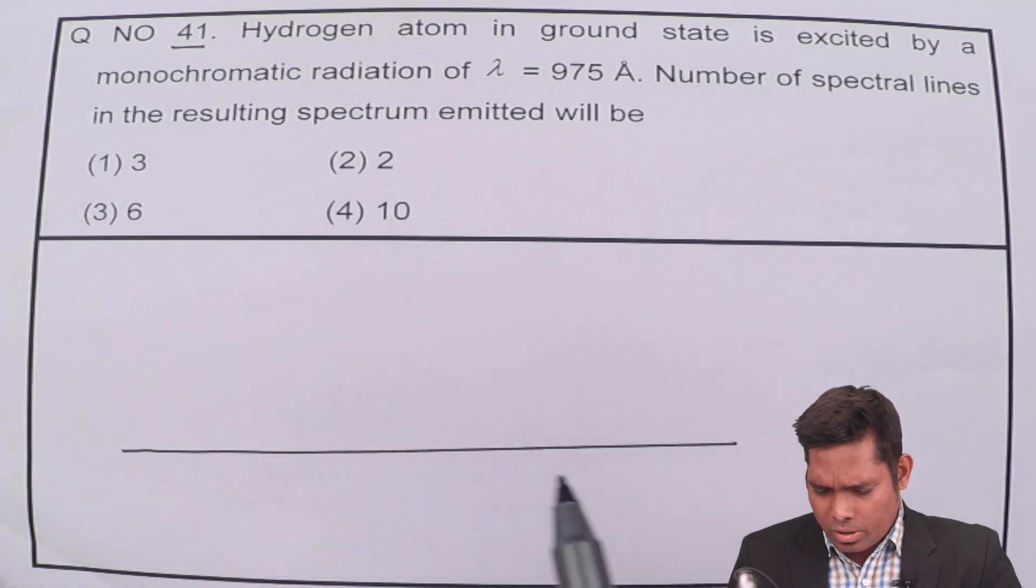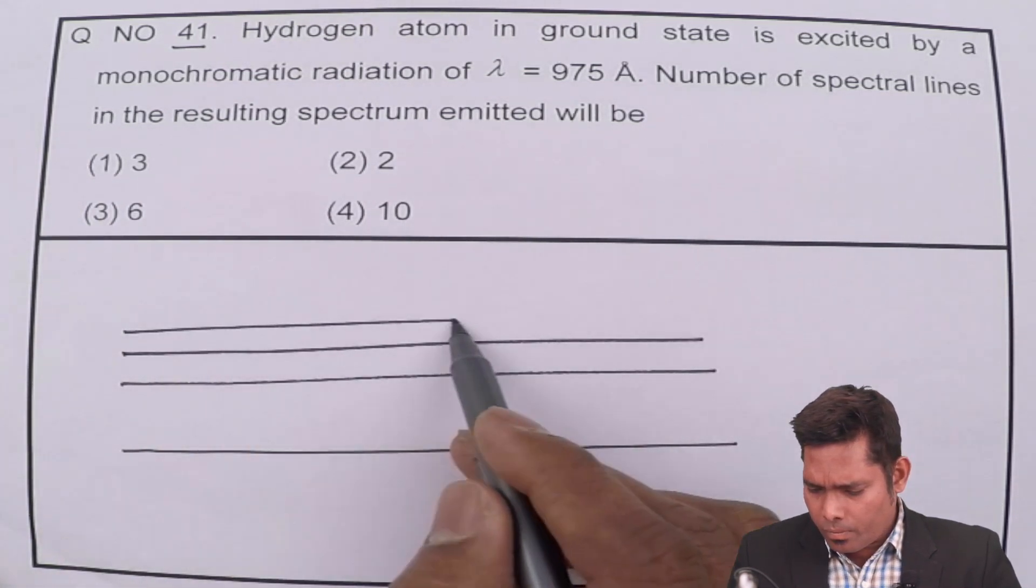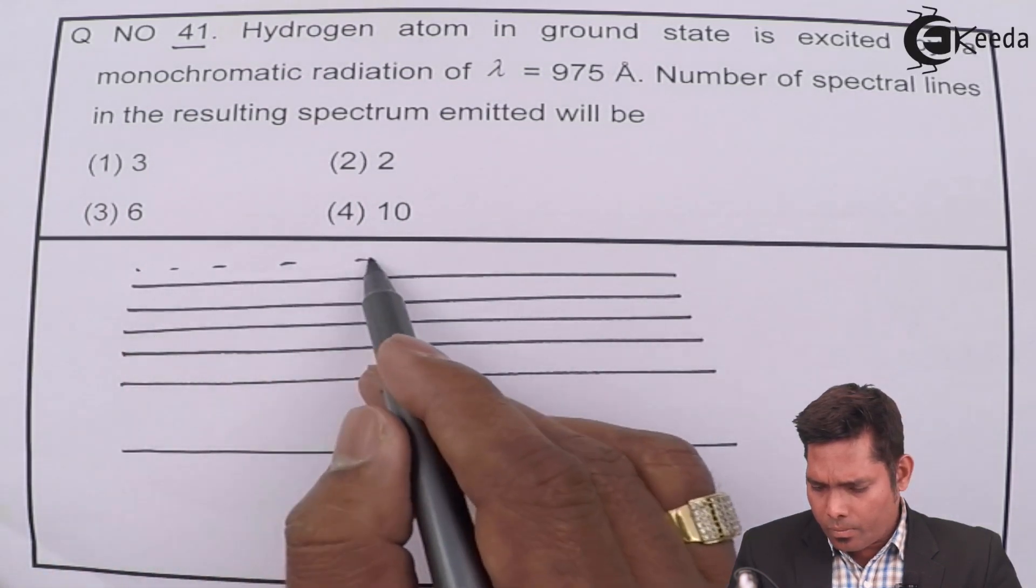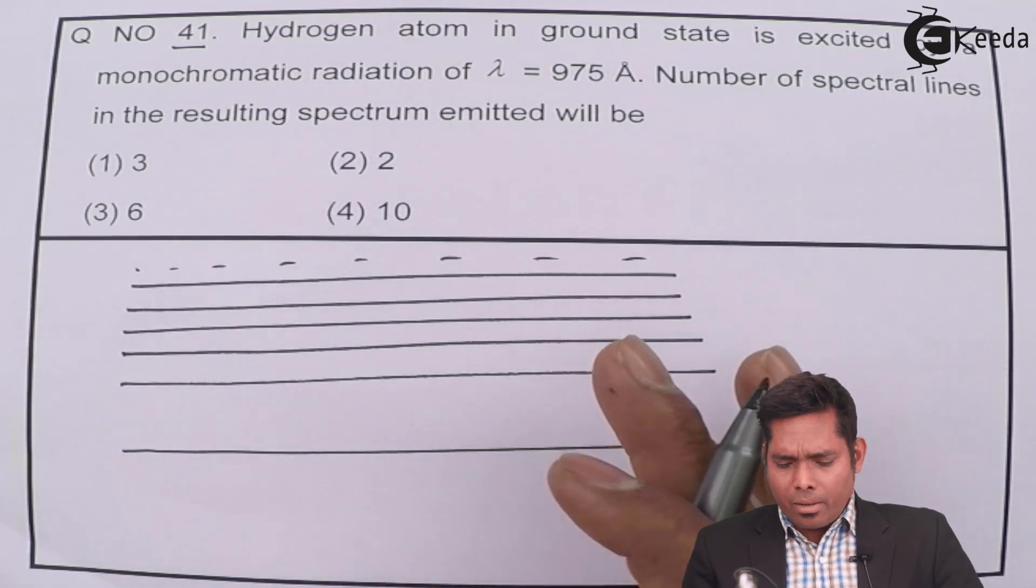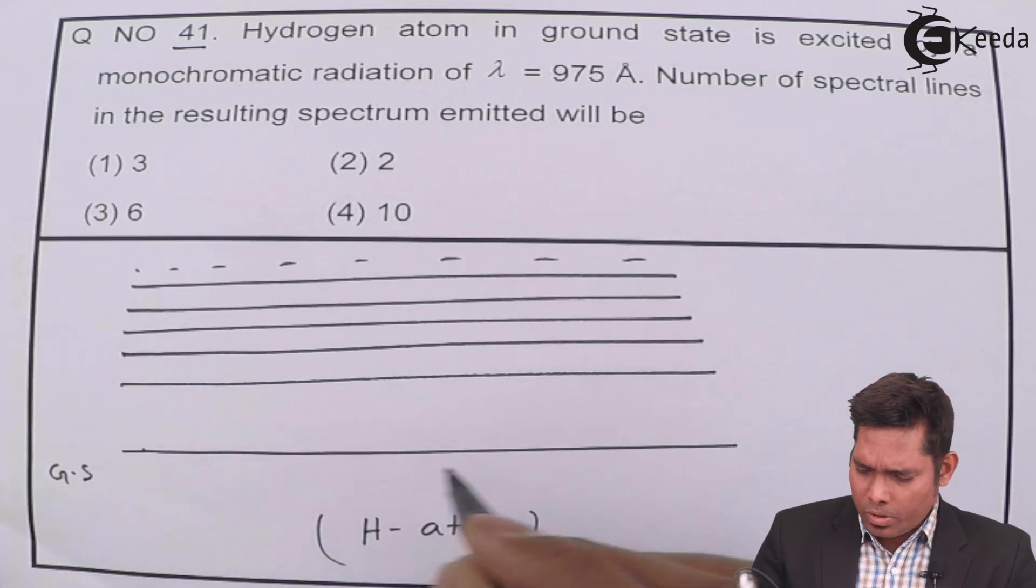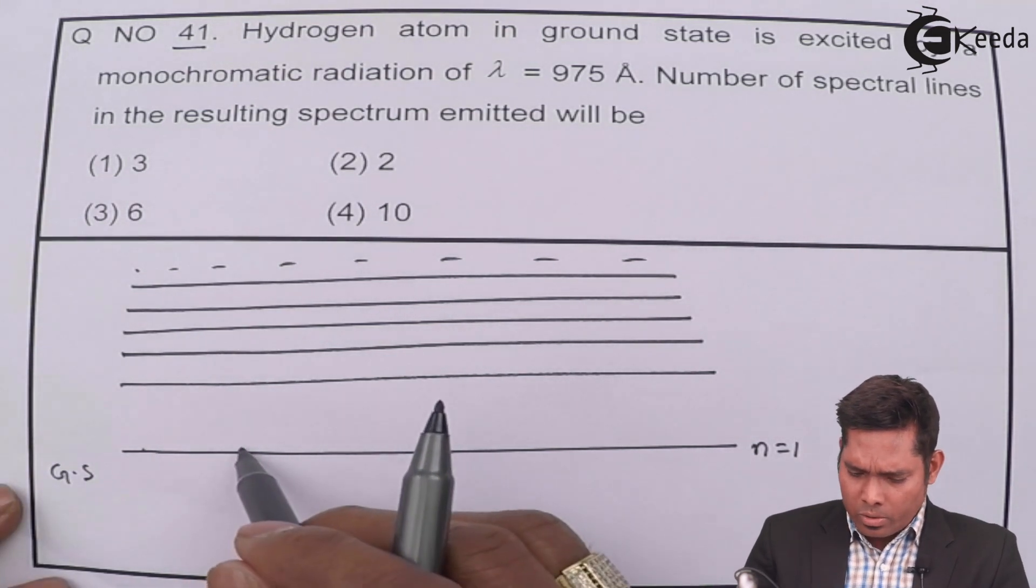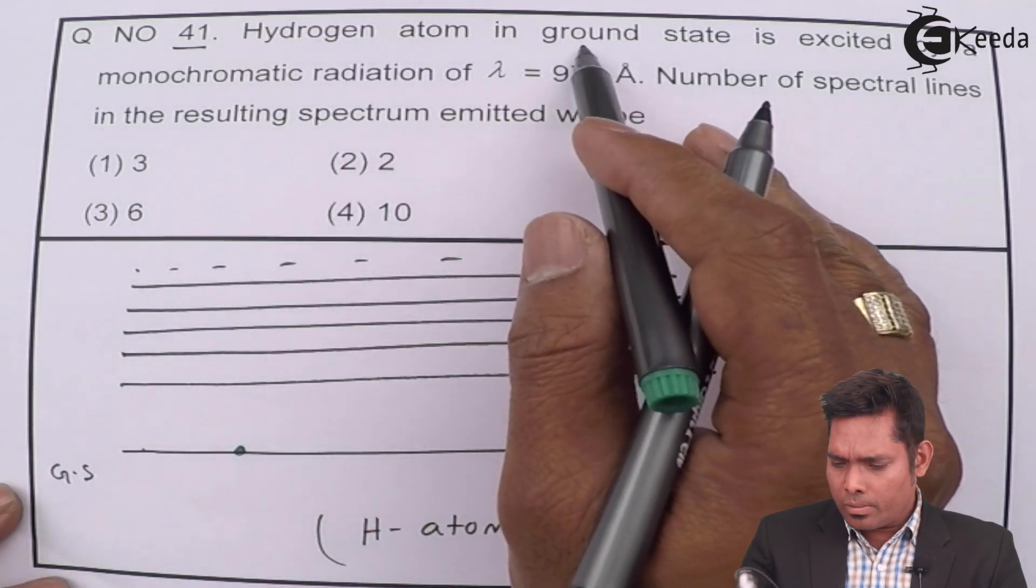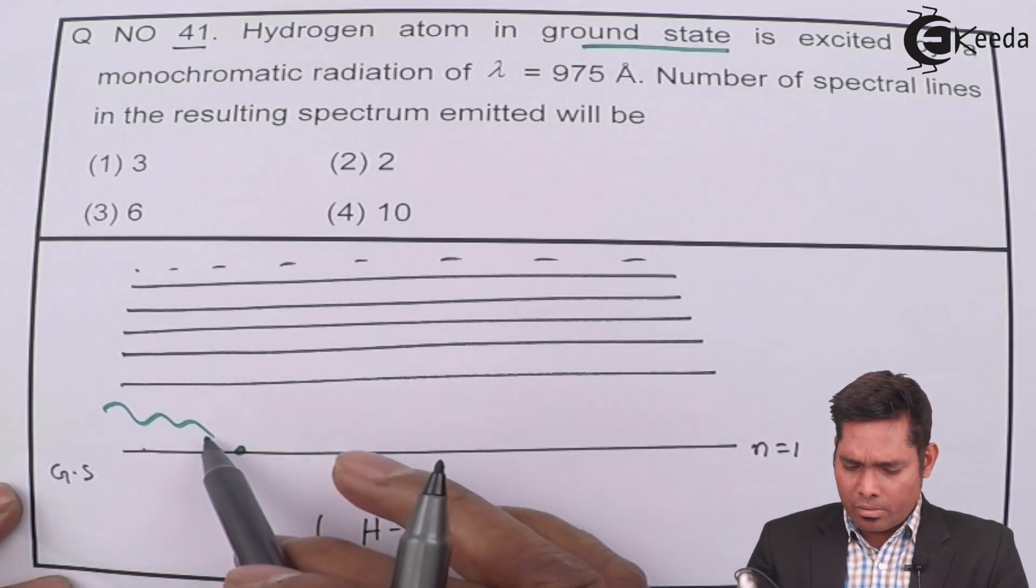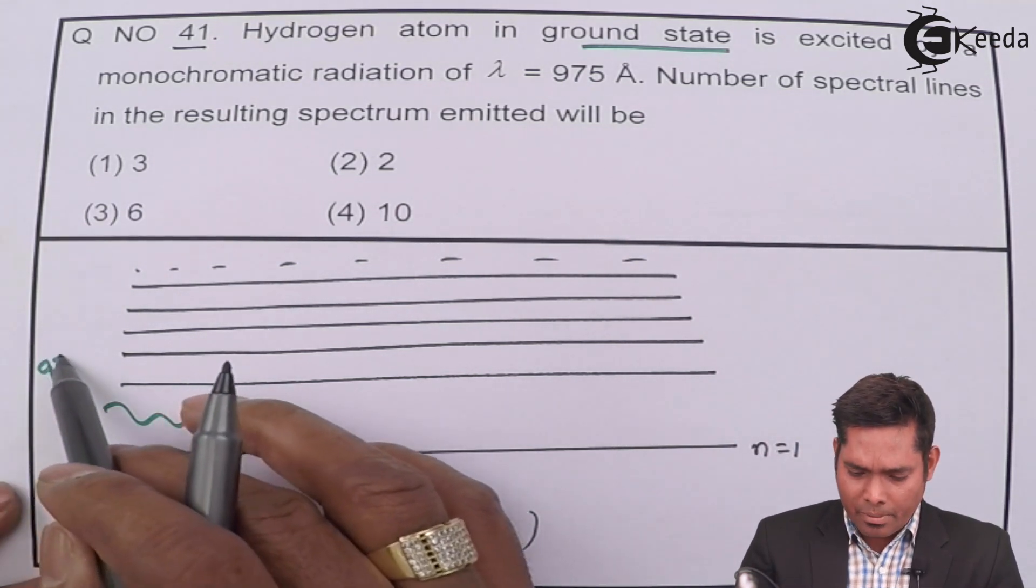I have a situation like this. This is the energy level diagram of hydrogen atom. This is the ground state, which stands for n equals to 1. I have an electron in the ground state, hydrogen atom in the ground state. This hydrogen atom in the ground state is excited by a monochromatic radiation. So there is a radiation which is incident on this, which wavelength is lambda, which is given by 975 Angstrom.